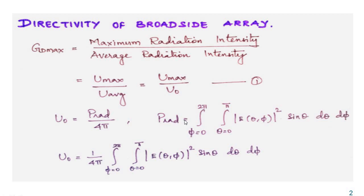Power radiated calculations can be done by taking the expression: integral over φ from 0 to 2π, and elevation angle θ from 0 to π, of |E(θ,φ)|² sin θ dθ dφ. First we have to calculate U_naught, and then substitute this expression to get the directivity of broadside array. U_naught is equal to radiated power divided by 4π.